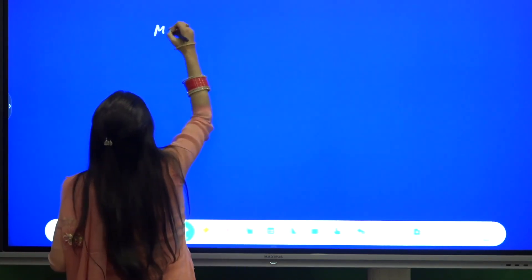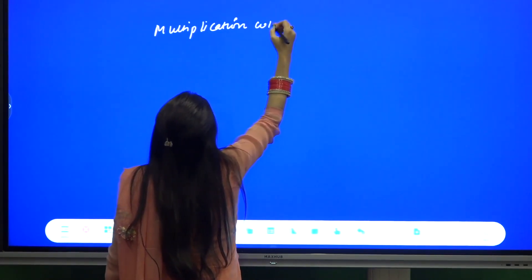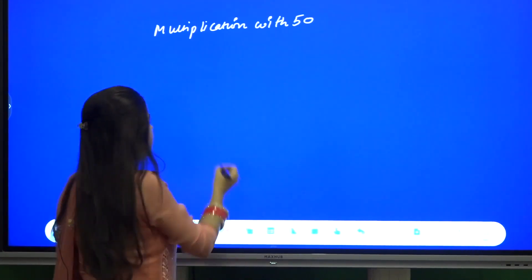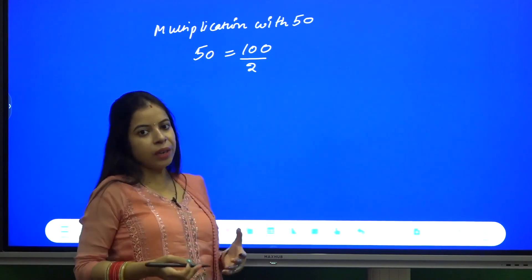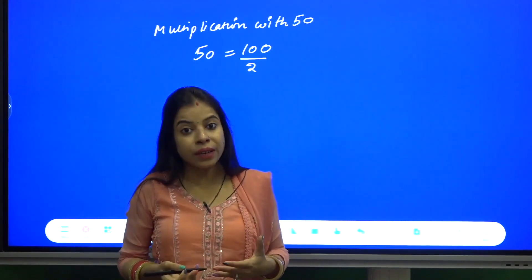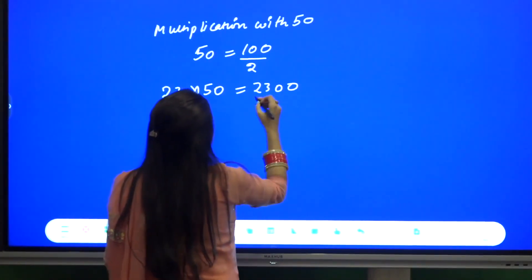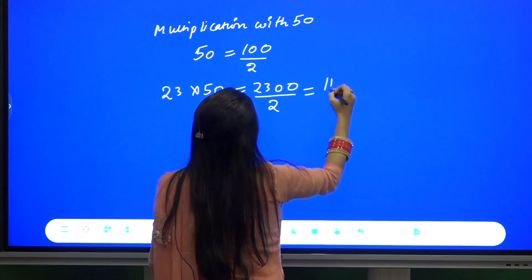Let us take another type: multiplication with 50. As we know, we can write 50 as 100 by 2. So given any number, we just need to multiply it with 100 and then take half of the result. For example, 23 into 50 is 2300 by 2, and taking the half gives us 1150.